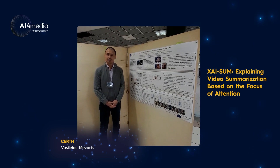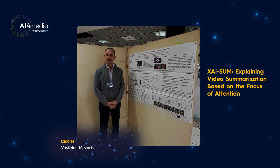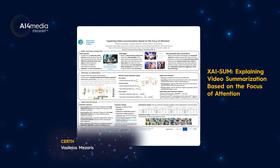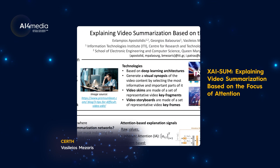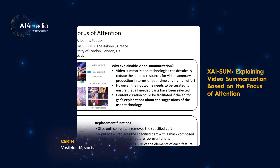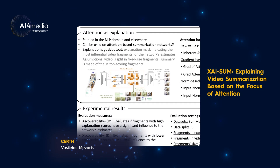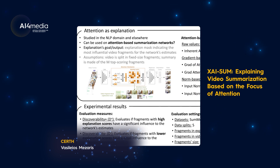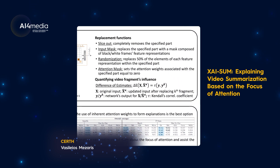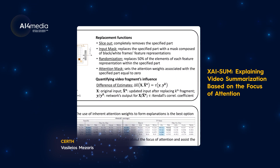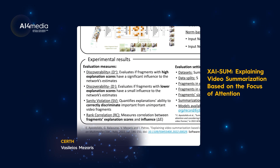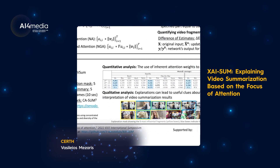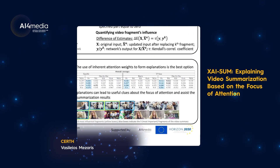My group does a lot of work on the topic of AI explainability — developing methods that can help us understand why different classifiers make the decisions that they make. This is important for transforming them from black boxes to methods that we can assess how they work and understand how to interpret their results.